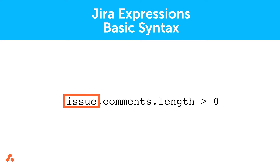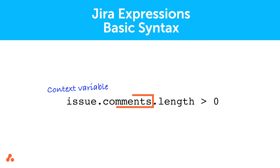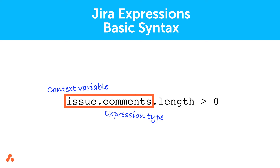The first variable determines the context in which the expression is evaluated. For this example, the variable is issue, which means that the query checks the issue for a true value. Next is the second variable, or the expression type. This indicates which object to run the code against. In this example, the type is comments, which means that the query checks the comments property. When combined, the first two parts of this code tell us that the query is checking the comments property within the issues.